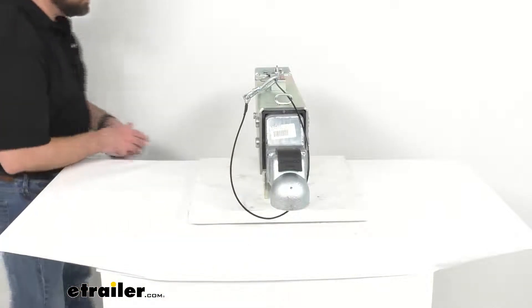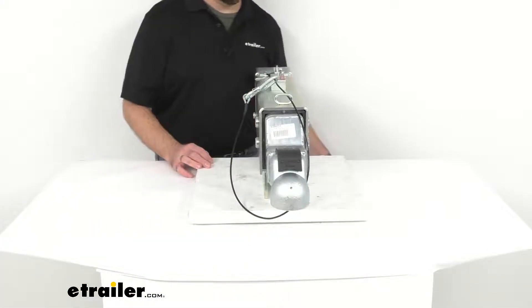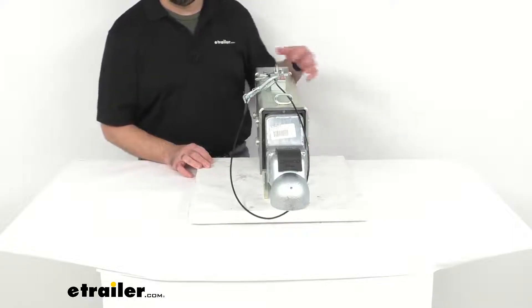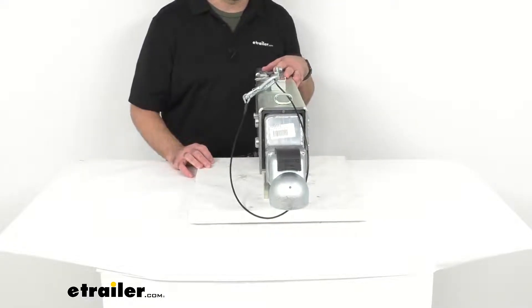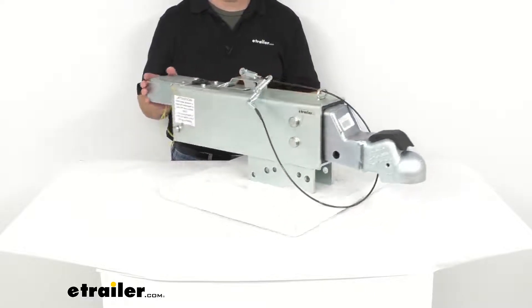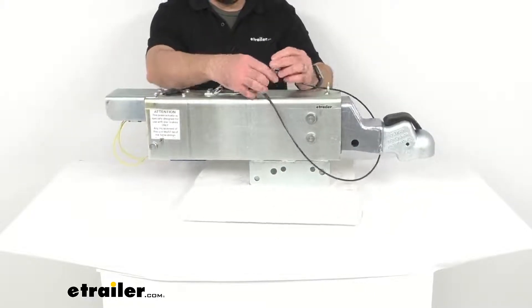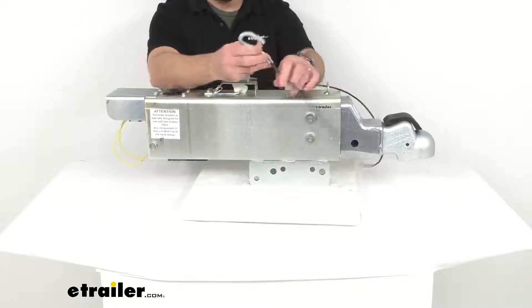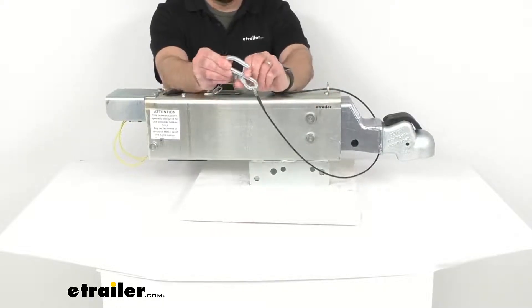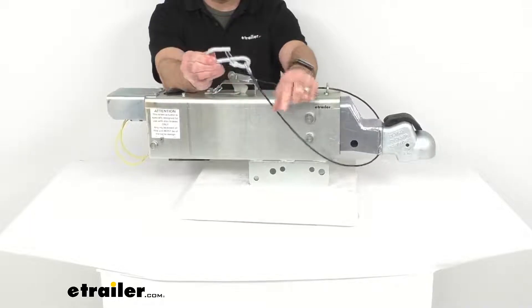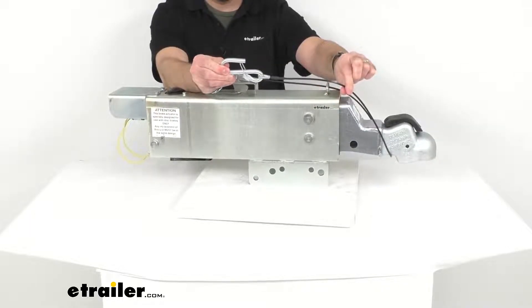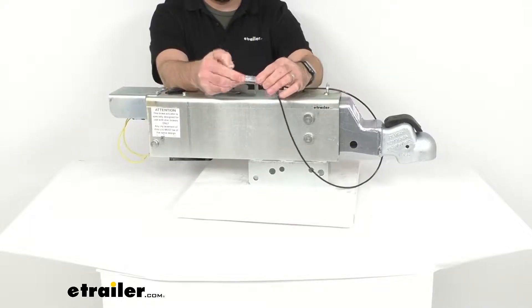On the inside there is an acetyl copolymer lining that provides smooth operation as this actuator telescopes in and out. The breakaway is included with this snap hook on the safety cable to ensure a secure connection to your breakaway lever.